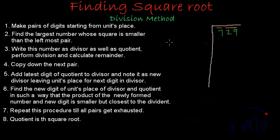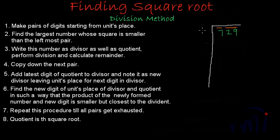In the left-most pair we have only one digit — never mind, this is going to work perfectly fine. The second step says: find the largest number whose square is smaller than the left-most pair. Starting from 2: 2 squared is 4, which is smaller than 7. Checking 3: 3 squared is 9, which is bigger than 7, so we take 2 as our divisor.